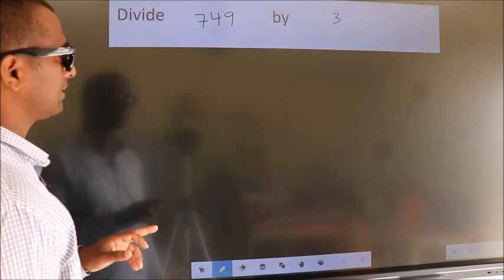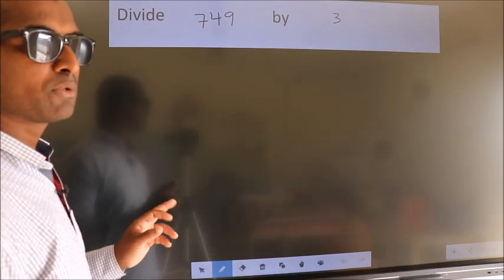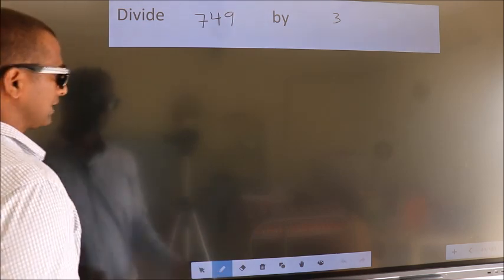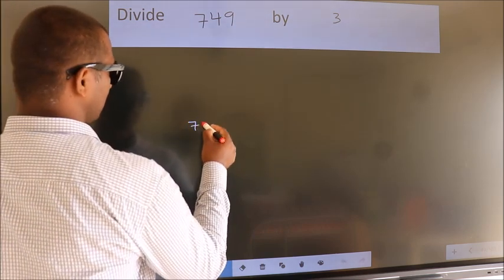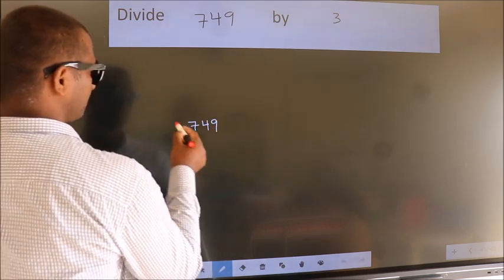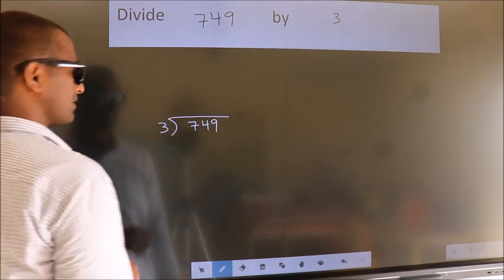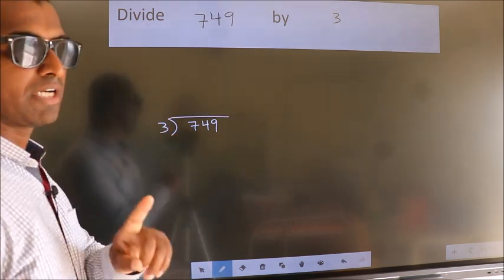Divide 749 by 3. To do this division we should frame it in this way. 749 here, 3 here. This is your step 1.